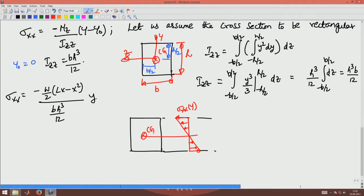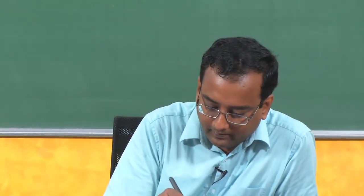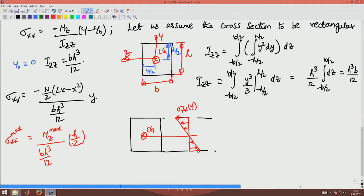At the bottom, y is negative and the bending moment is positive, so the stress is positive — the bottom fiber is in tension. The variation is linear, with the neutral axis passing through the CG of the cross-section. Maximum sigma xx occurs where Mz is maximum, and since the variation is linear in y, it occurs at the extreme fiber y = h/2. With Mz_max equal to wL²/8, sigma xx max becomes 6wL² divided by 8bh² — that is, 6Mz/(bh²).